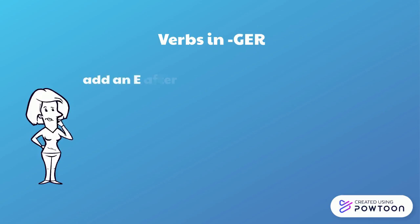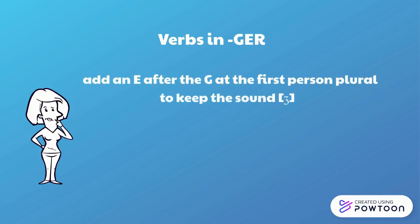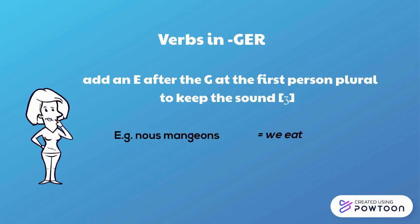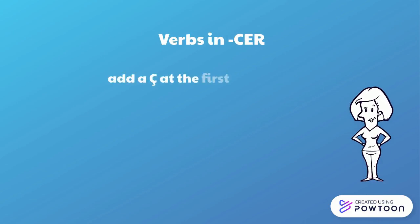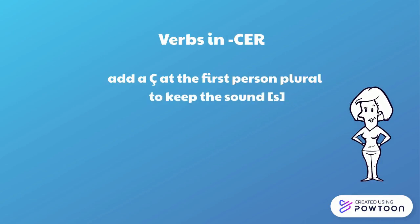For verbs ending in -GER, it is necessary to add an E after the G at the first person plural to keep the sound J — otherwise it would be pronounced G. For instance, 'nous mangeons' — we eat. For verbs ending in -CER, it is necessary to add a cedilla to the C at the first person plural to keep the sound S — otherwise it would be pronounced K. 'Nous commençons' — we begin.